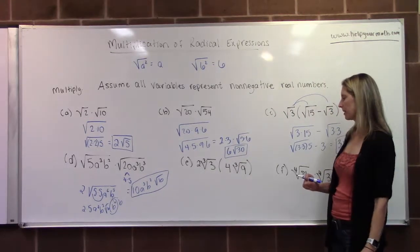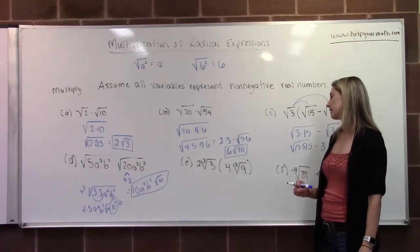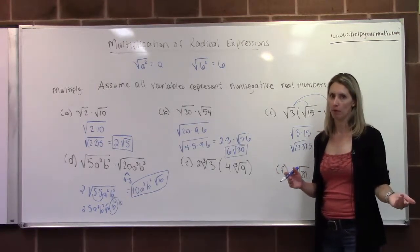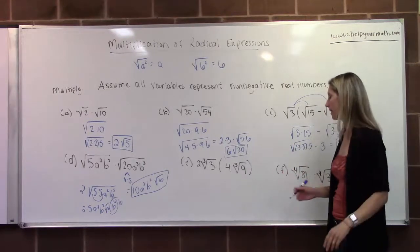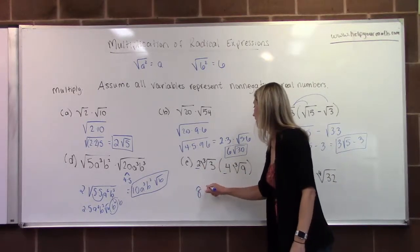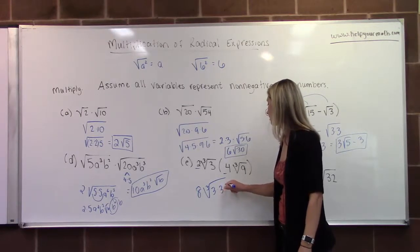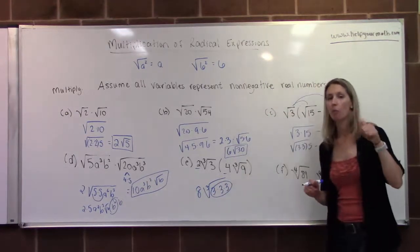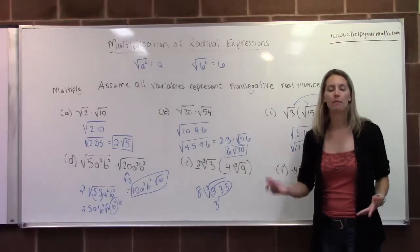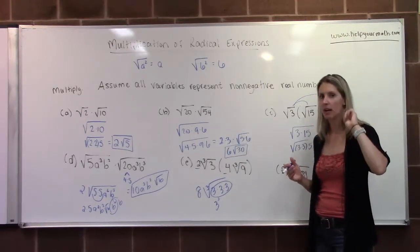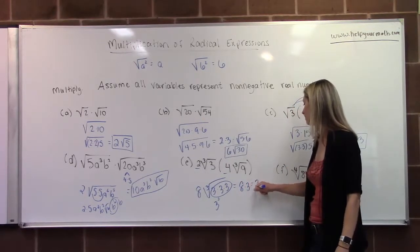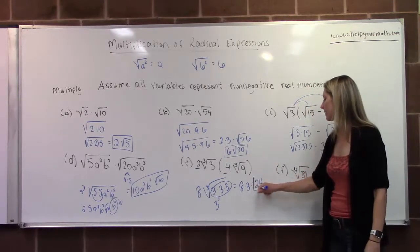Letter E: we have 2 times the cube root of 3 times 4 times the cube root of 9. For something to come out of a cube root, we need three of the same factor. We multiply the coefficients: 2 times 4 is 8. Under the radical we have 3, and 9 is 3 times 3, so altogether we have three factors of 3 — that's 3 cubed, or 27, which is a perfect cube. So 3 comes out of the radical with nothing left underneath. We multiply 8 times 3 to get 24.